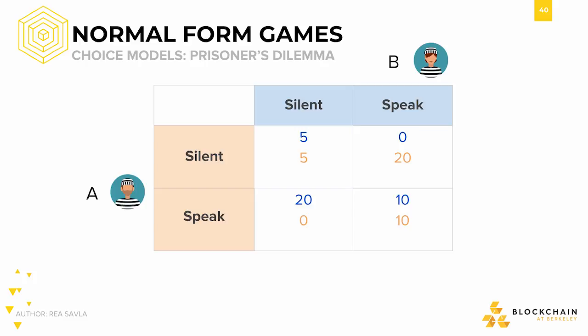This outcome is our Nash equilibrium. Given the state where both prisoners speak, neither prisoner can change only their decision to get a better sentence. This is called the prisoner's dilemma, where both prisoners end up with a 10-year sentence even though they could have both gotten only a 5-year sentence if they had both remained silent.